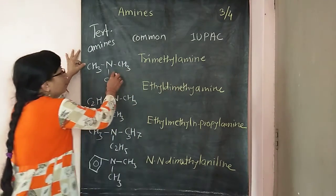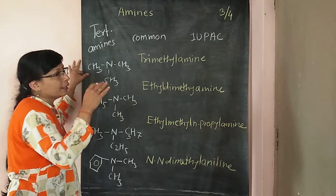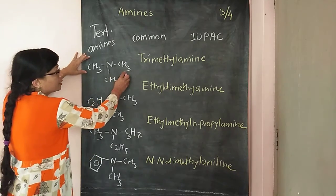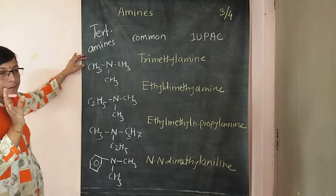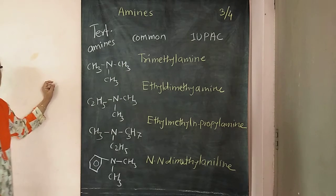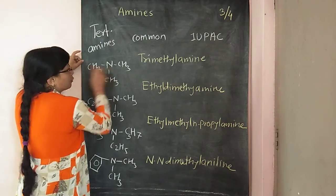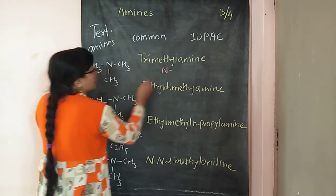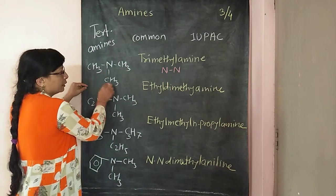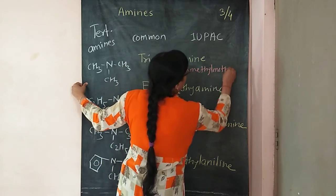Now the IUPAC names. For the IUPAC system, we find the parent chain and the ending 'e' is replaced by 'amine'. Here three same groups are present, so we separate one member as the parent. Methane is the parent, giving methanamine as the base name. The other two methyl groups are attached to nitrogen, so the name becomes N,N-dimethylmethanamine.